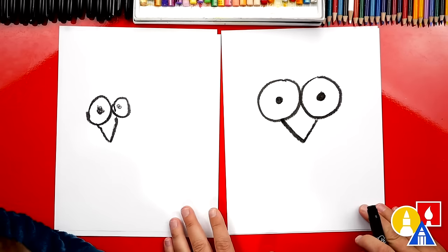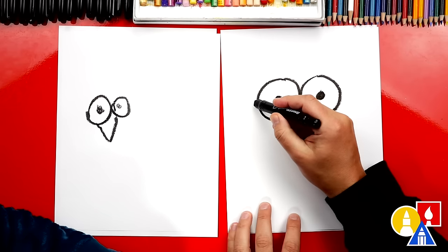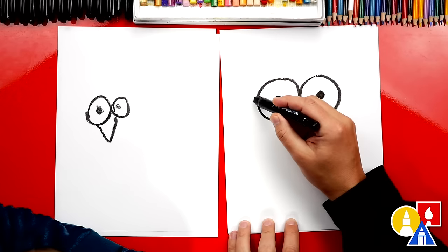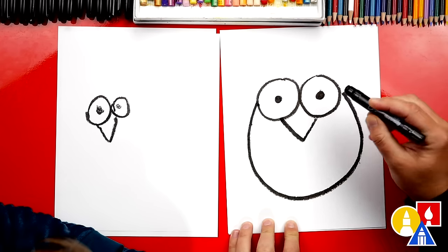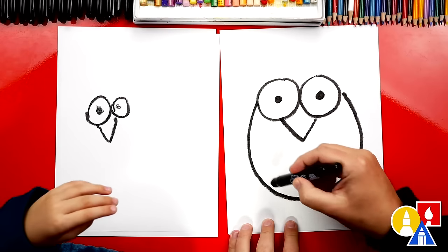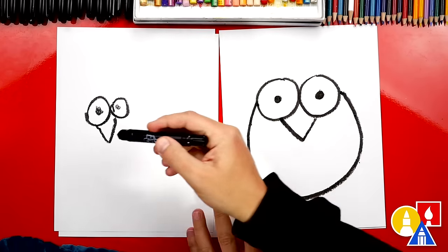Next, we're going to draw the body. We're going to draw our owl body. We're going to start here. We're going to draw the letter U. We're going to draw a big letter U. We start here, come all the way over, and then touch the eye on this side.